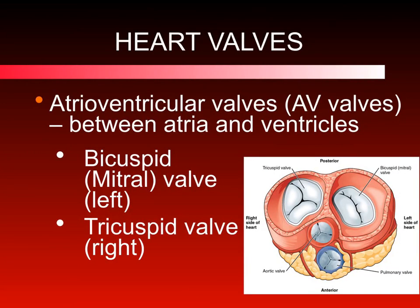There are four valves in the heart. Two are called atrioventricular valves and are found between the atria and the ventricles. The one on the left is called the bicuspid because it has two flaps, and the one on the right is called the tricuspid because it has three flaps — think "tri-right," tricuspid is on the right. The atrioventricular valves prevent blood from re-entering the atria once it has left. The bicuspid valve prevents blood from leaving the left ventricle and going back into the left atrium, and the tricuspid valve prevents blood from the right ventricle from re-entering the right atrium.